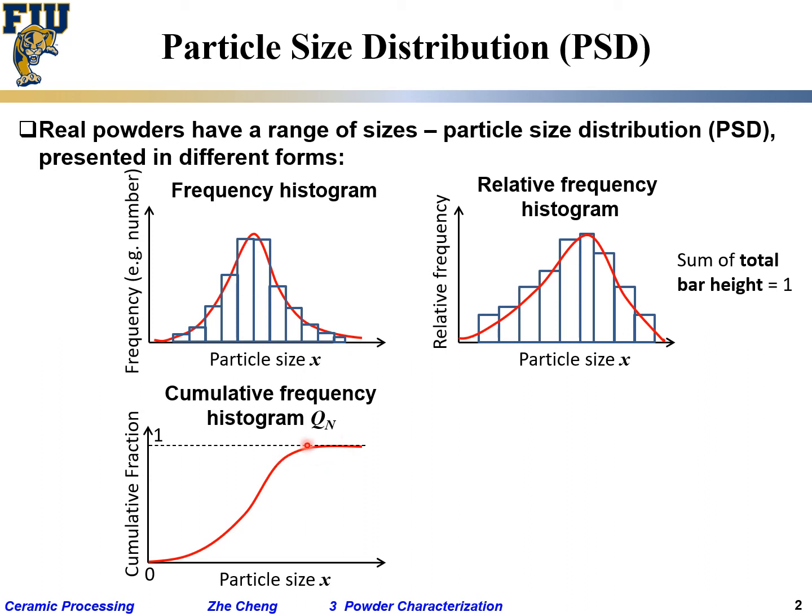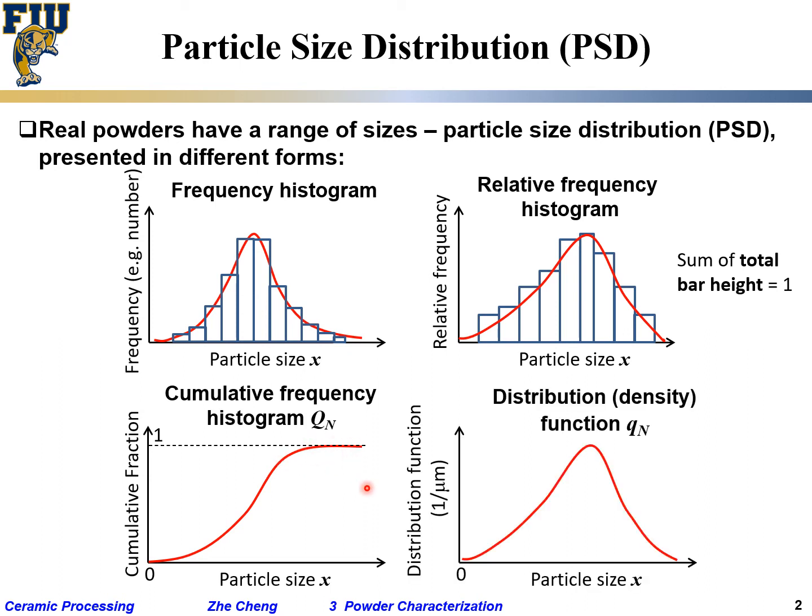And then the other form is called the distribution function, which means the total area underneath the curve would be 100% or one. The function here would be dq—the local number divided by the incremental distance.